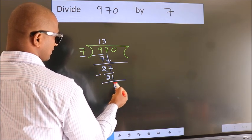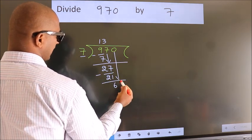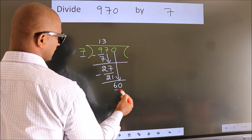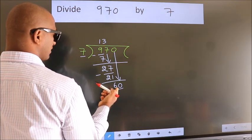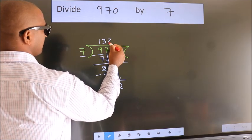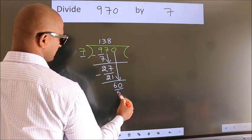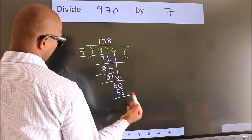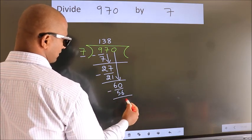After this, bring down the beside number. So, 0 down. So, 60. A number close to 60 in the 7 table is 7 eights, 56. Now we subtract. We get 4.